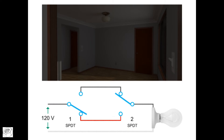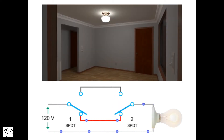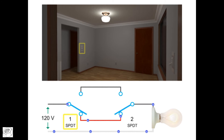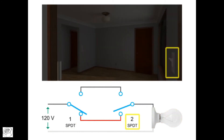The switches can also both be in the down position, in which case current flows and the light is on. Or switch one can be down and switch two up, in which case the circuit is again broken, no current flows, and the light bulb is off.